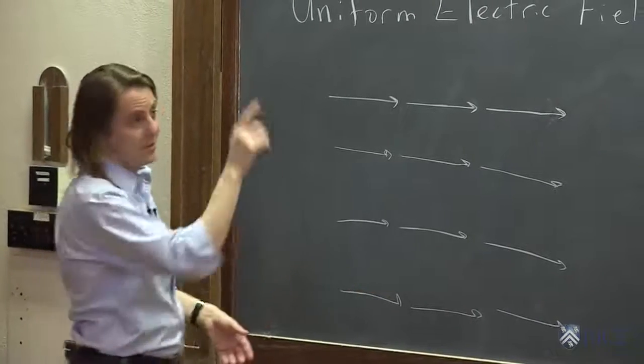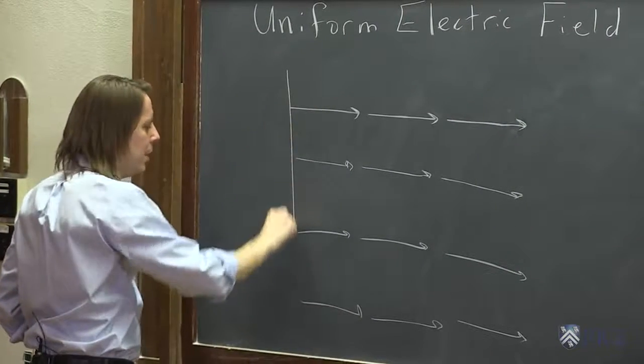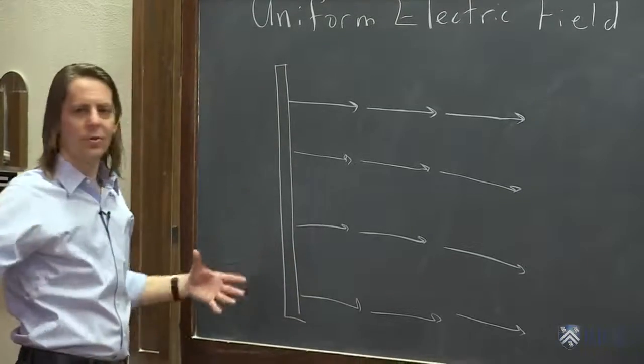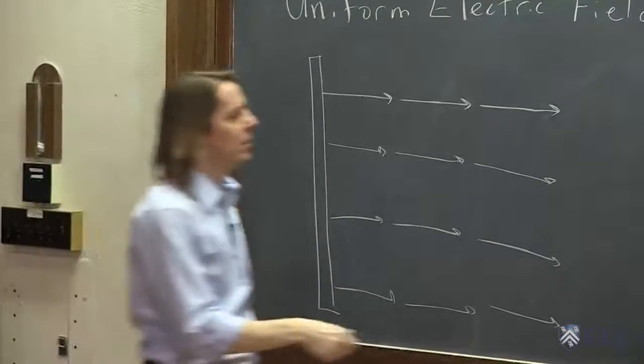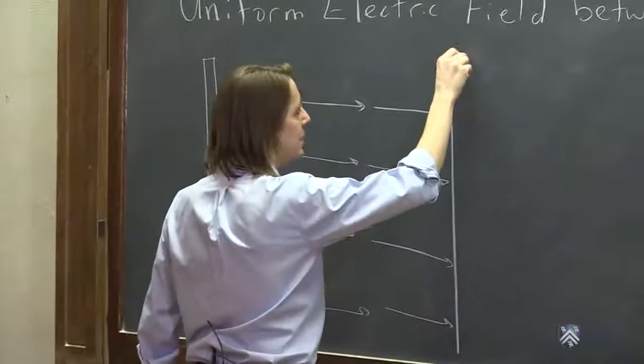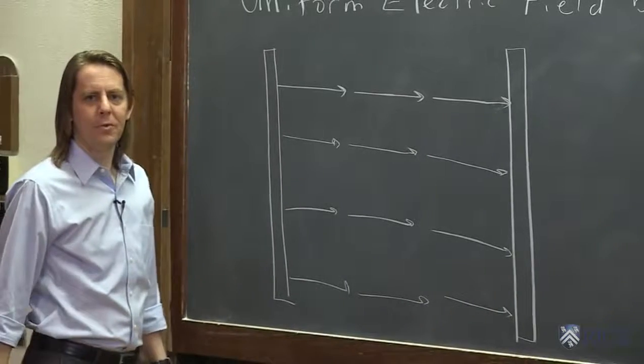So the way you make it is the second part, the charged plates. So if you have a charged plate, and plate just means a large surface, it could be a square, it could be a circle. It doesn't really matter. Like this and like this. You'll create a uniform field.